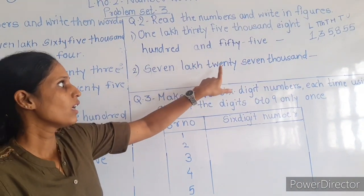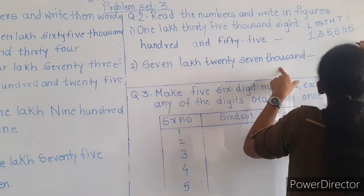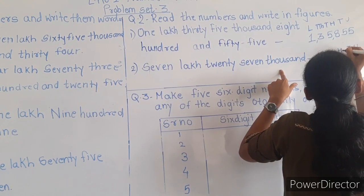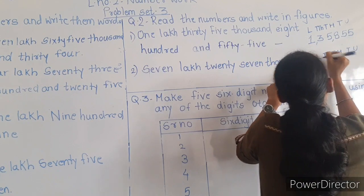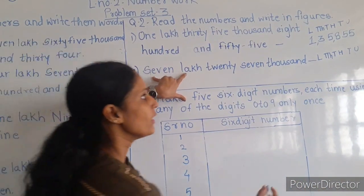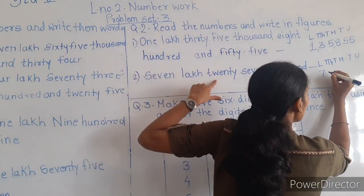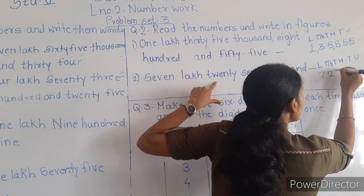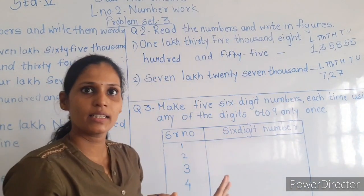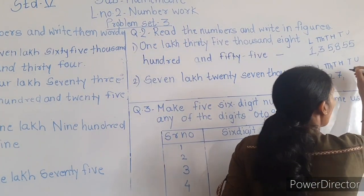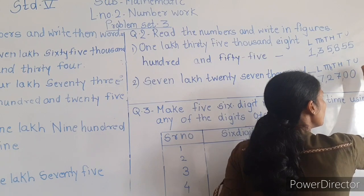The second one: 7 lakh, 27,000. First I will write the place value — unit, ten, hundred, thousand, ten thousand, lakh. Now what is given: 7 lakh, 27,000. They have not mentioned anything for hundreds, tens, or units place, so in the hundreds place it will be 0, in the tens place it will be 0, and in the units place it will be 0.